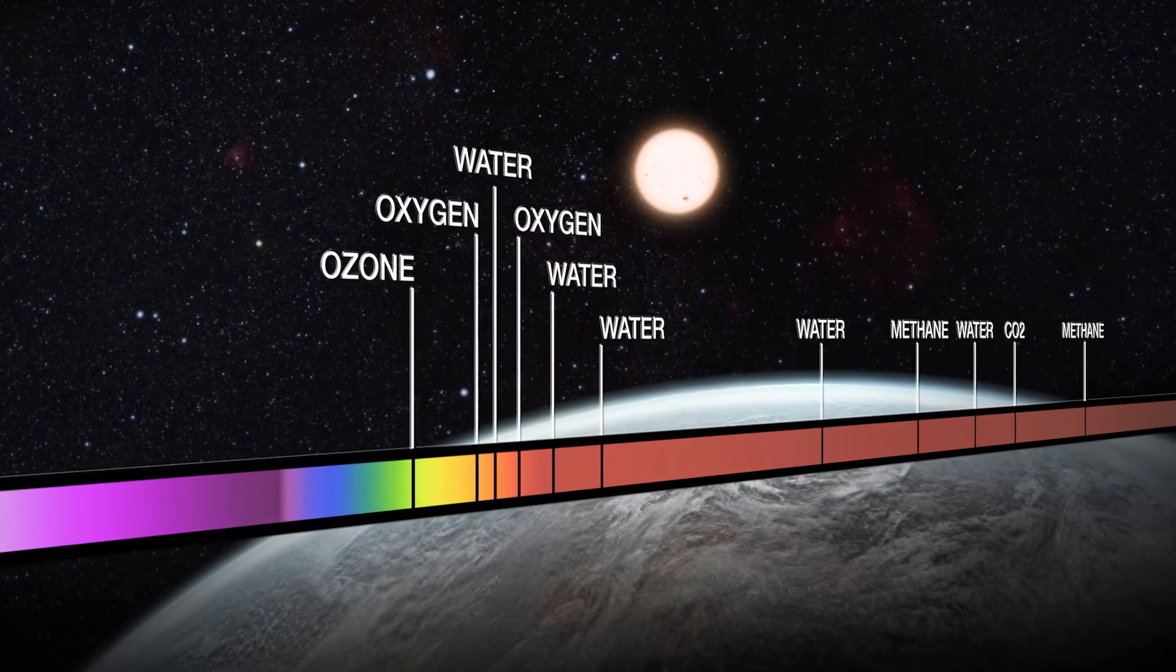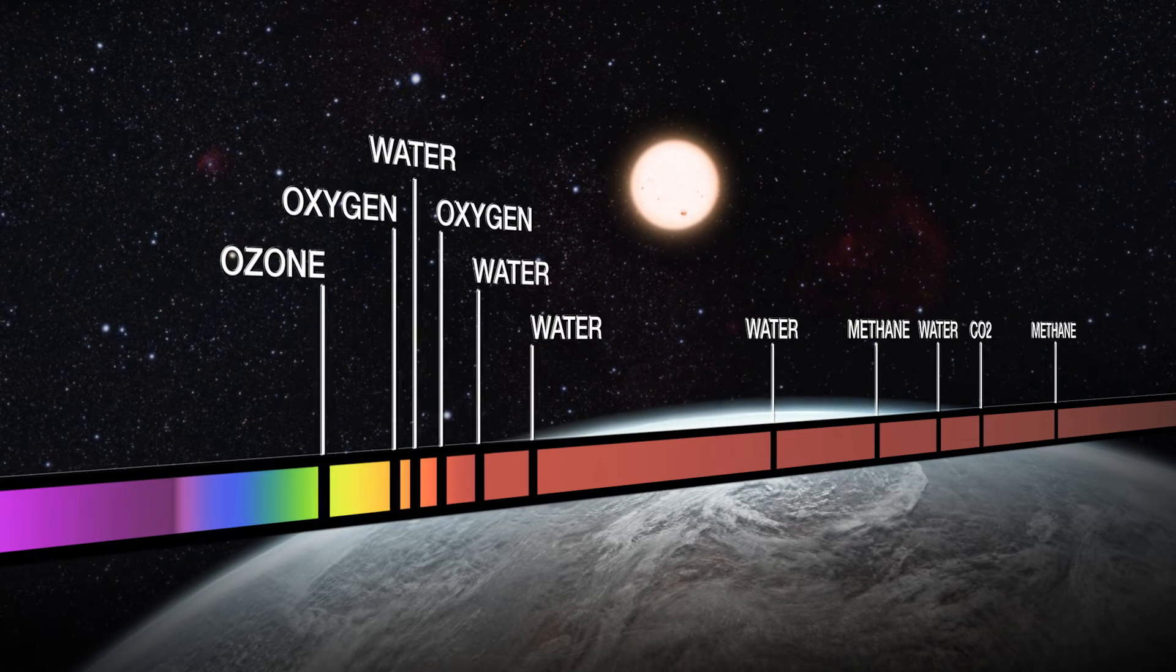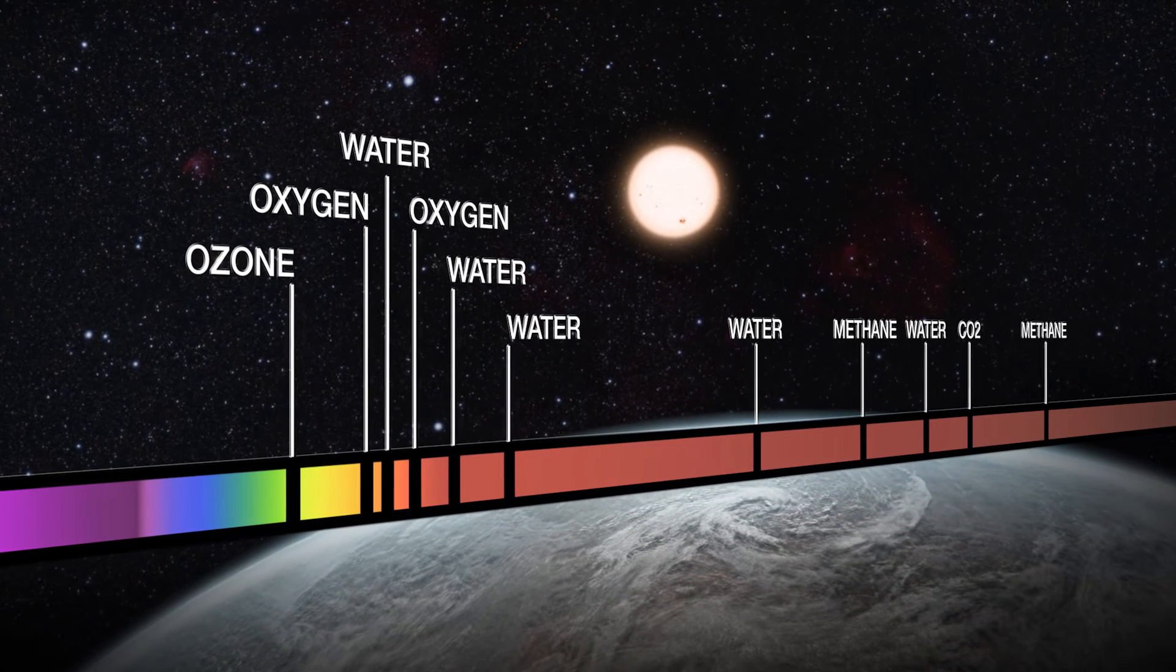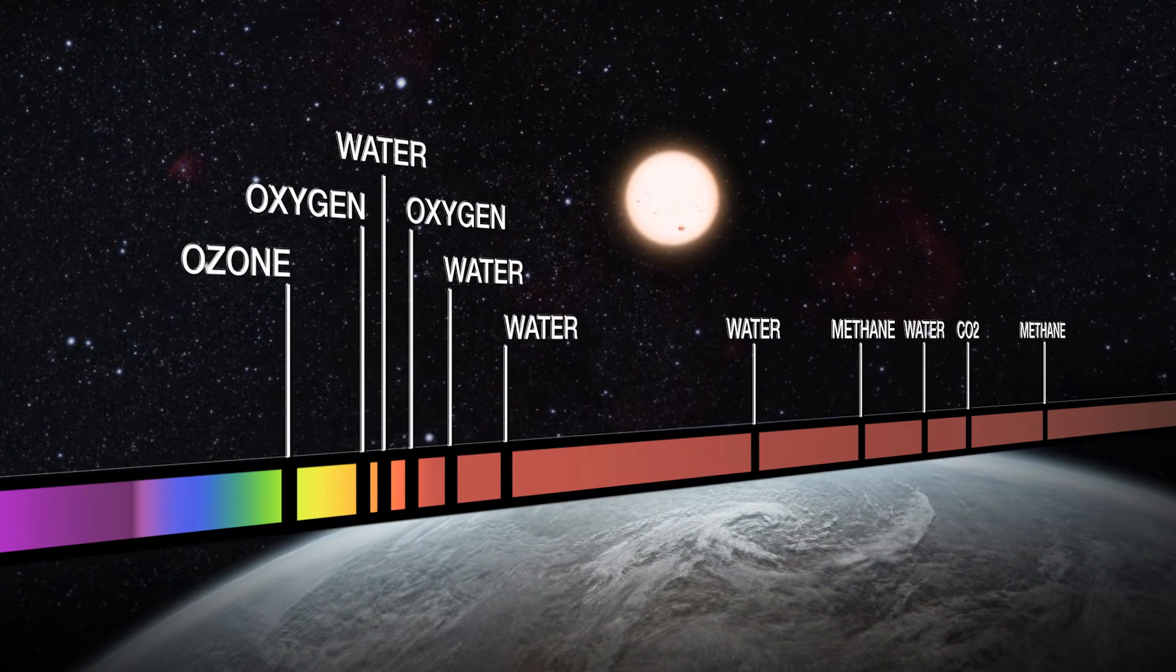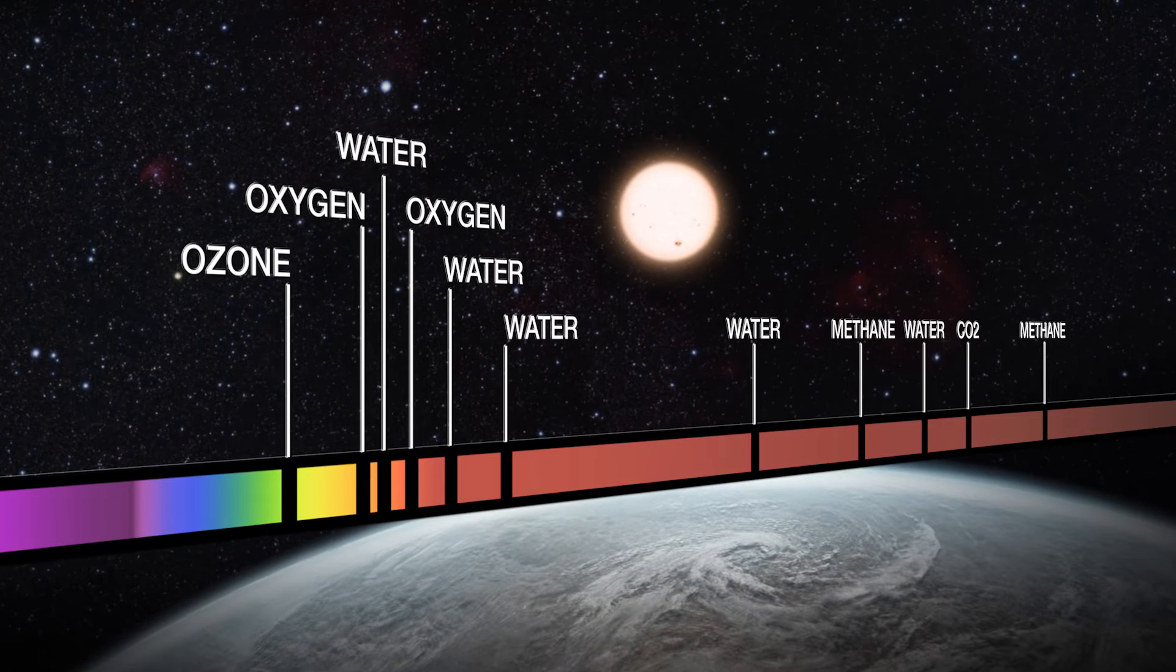This is how astronomers can identify the presence of specific atoms and molecules, some of those being key prerequisites for life, such as methane, water, oxygen, ozone, and others.